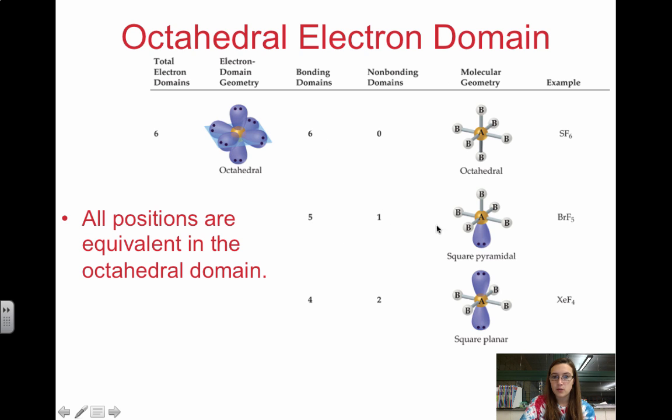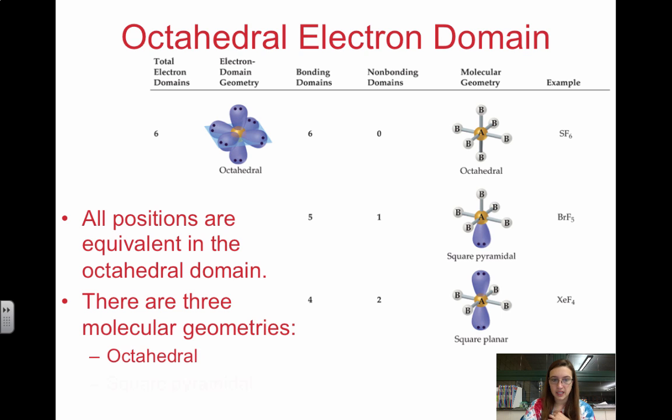Five, one—so we take one of the atoms away. That creates a square pyramidal shape. And then four, two—remember we have to take electrons away essentially opposite each other to create the minimum repulsion. So we take these two away and we create a square planar shape. These are your three molecular geometries.